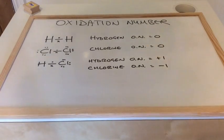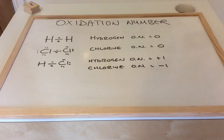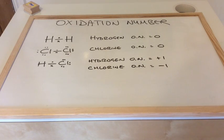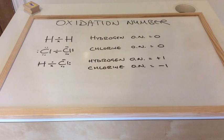In this video I'm going to take a look at oxidation number. I've drawn three substances on the board: hydrogen, chlorine, and hydrogen chloride. In H2 the oxidation number of each hydrogen is zero. In Cl2 the oxidation number of each chlorine is zero. But in HCl the oxidation number of hydrogen is plus one, and the oxidation number of chlorine is minus one.